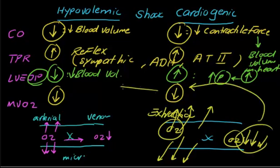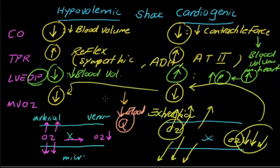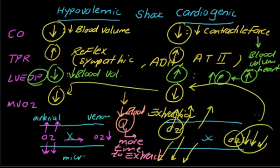Why is there an increase in oxygen extraction? Because both cardiogenic and hypovolemic shock result in a decrease in blood flow. Once blood flow decreases, there is more time for oxygen to be extracted from the arterial system in the microcirculation. As a result of more time to extract oxygen, the oxygen content in the venous system will be decreased. That is why mixed venous oxygen content is decreased in both cases.